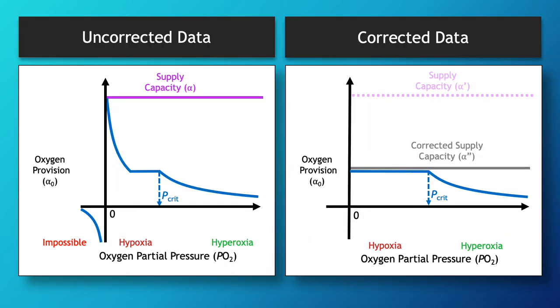Now, if we compare the oxygen provision plot for this example before and after removing this measurement error, we can see that the spike in oxygen provision observed at low oxygen is removed in the observed supply capacity, which is the gray line in the right figure, makes more visual sense with the rest of the data.